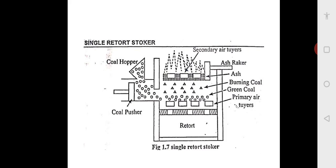The ash coming to the top is removed regularly by an ash raker. This is how the single retort stoker works.